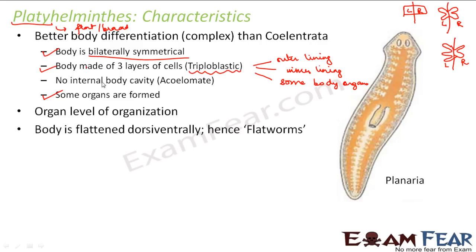Platyhelminthes have no internal body cavity. A cavity is an empty space-like structure inside the body where organs can lie. The internal body cavity is called coelom, and since these animals do not have a coelom, they are termed acoelomate — meaning without coelom.